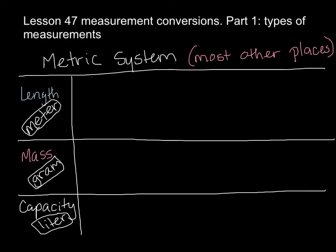In the metric system, they use a base unit in every measurement, and then they just put a prefix — a couple of letters in front — to tell you how it's chopped up or how many there are. Length means meter, gram means mass, and liter means capacity — how much it can hold. Let's look at how those are broken down.